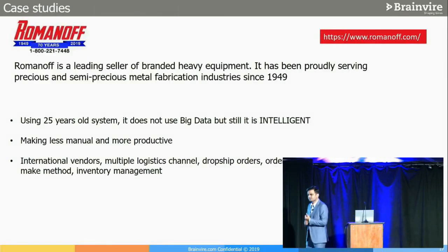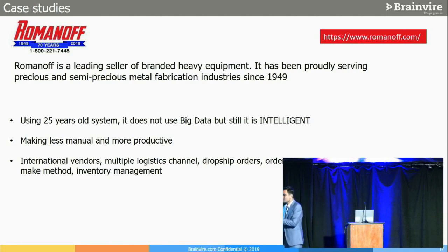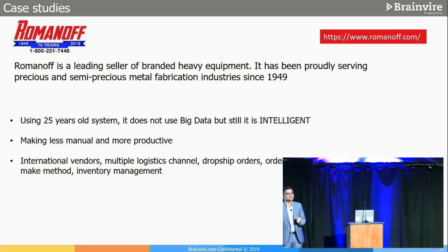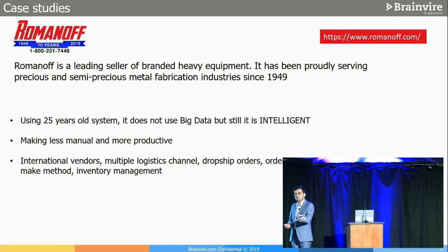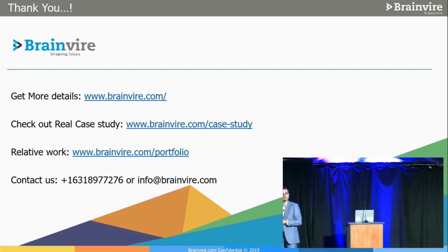As a case study, there was a company called Romanoff — a Long Island, New York-based company using a 25-year-old system that was still capturing data intelligently. We transformed them onto new systems with Odoo ERP, implemented machine learning tactics, and provided insights for their 15 sales people. From a 25-year-old system to a modern one — capturing and utilizing data to generate insights. That's what our company, Brainwire, along with the Odoo department, has been able to deliver. Thank you for listening.